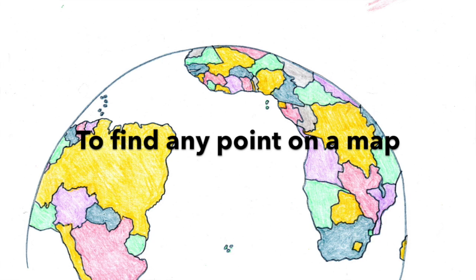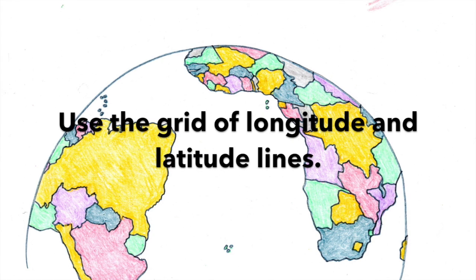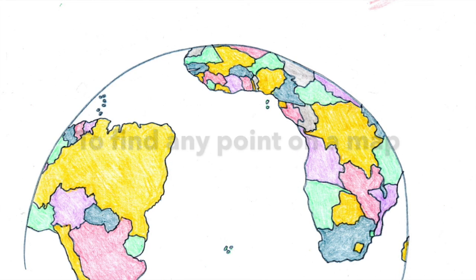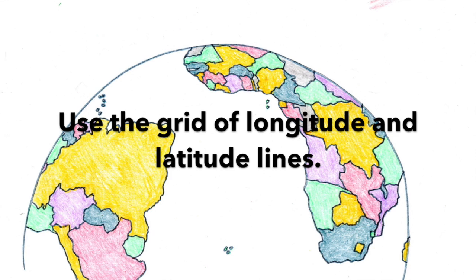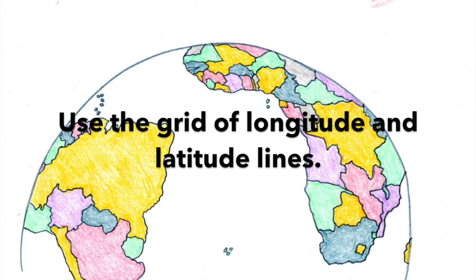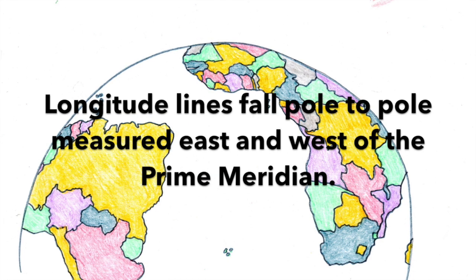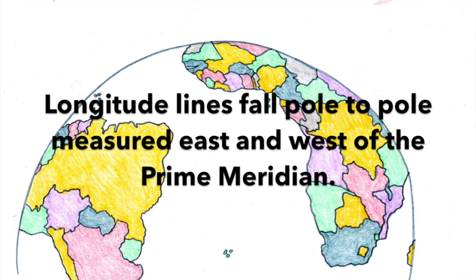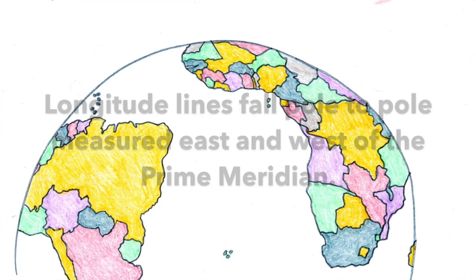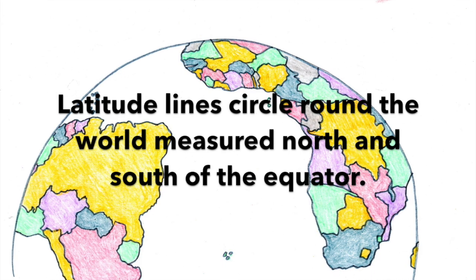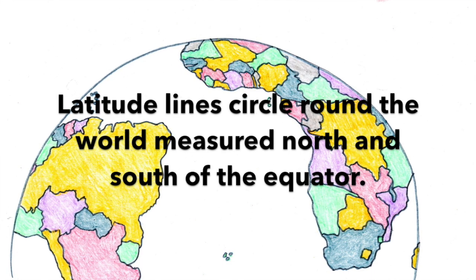To find any point on a map, use the grid of longitude and latitude lines. Longitude lines fall pole to pole, measured east and west of the prime meridian. Latitude lines circle round the world, measured north and south of the equator.